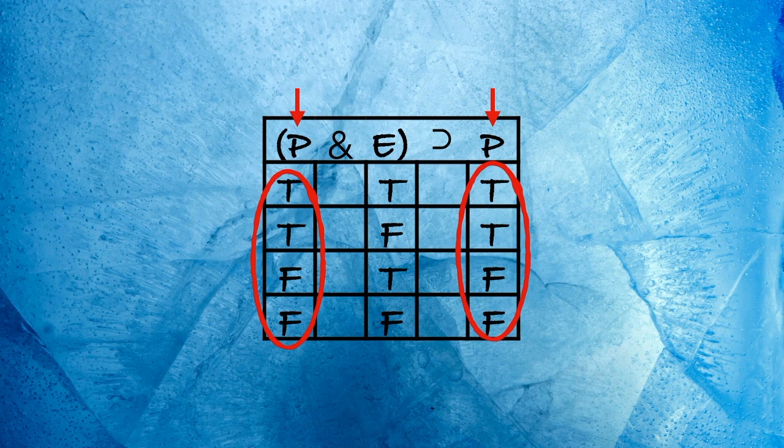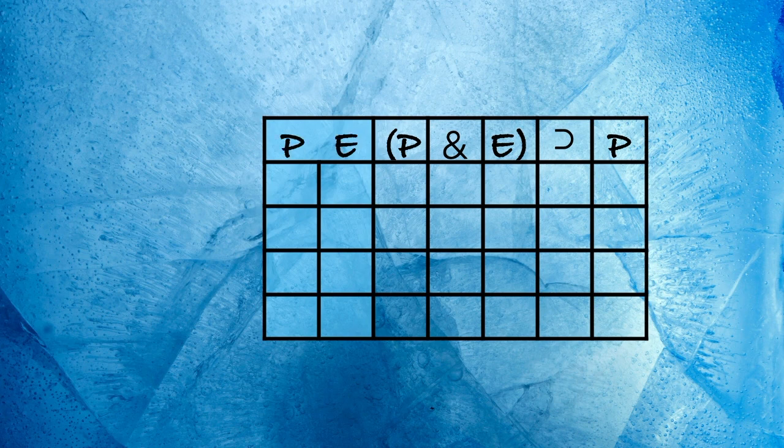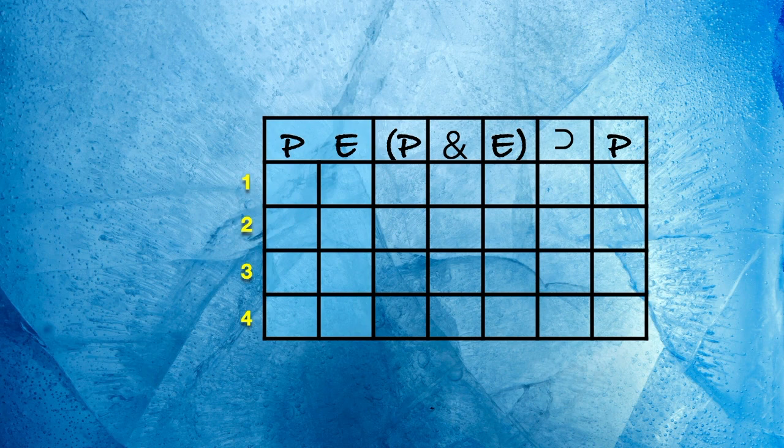That's why some people like to make truth tables like this. They make a little key off to the side. All the different sentence letters go in the key. In this case, we only have two, P and E. Two different letters, so four rows, using the pattern we've learned.